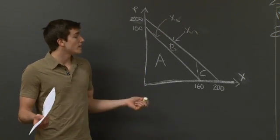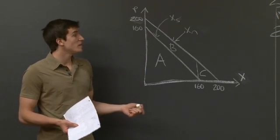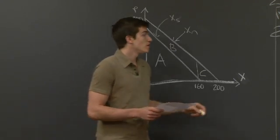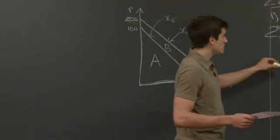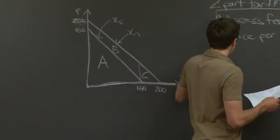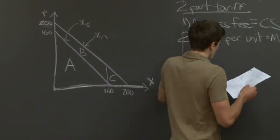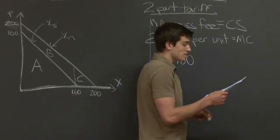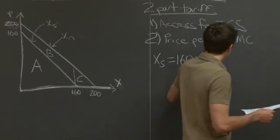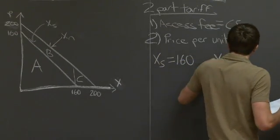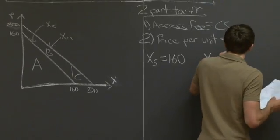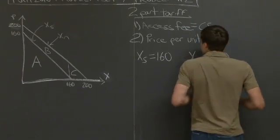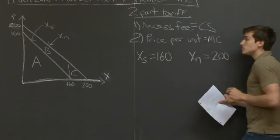So for part A, the bundle for the students is going to be equal to 160, and the bundle for the non-students is going to be equal to 200.